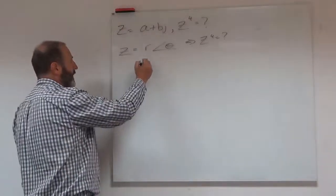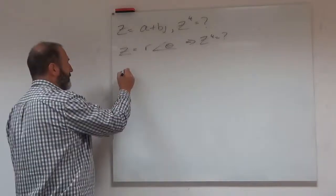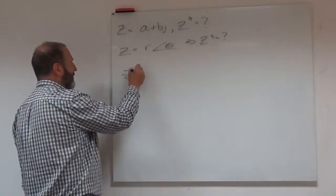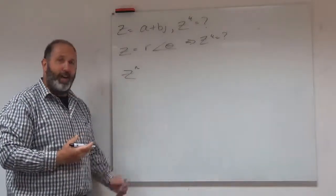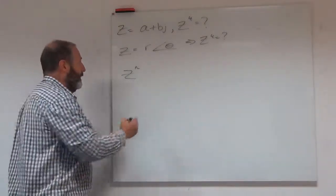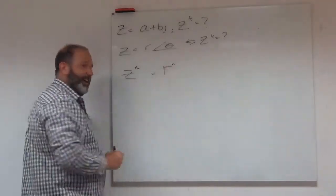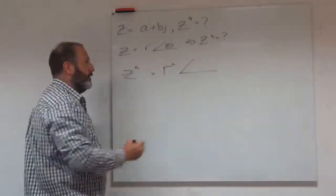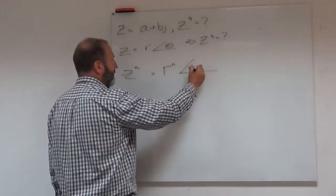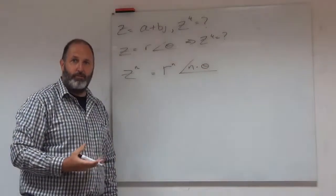So let's mention the general rule. If I have this r theta for my z and I want to find z to the n, so it could be z squared or it could be z to the 4, or any number, any power. Then the rule says I will have r to the n and then my new argument or my angle will just be n times theta. So n times the original angle. That's really quick.